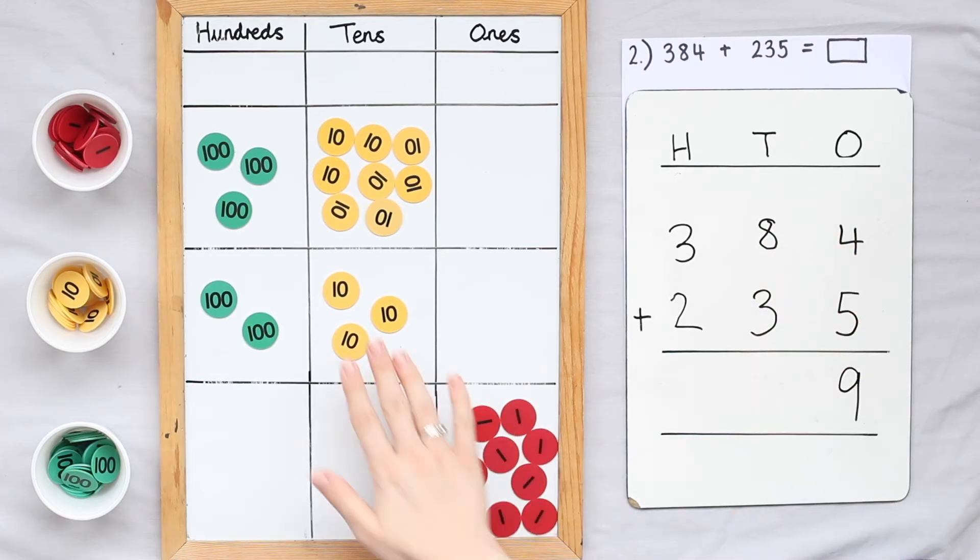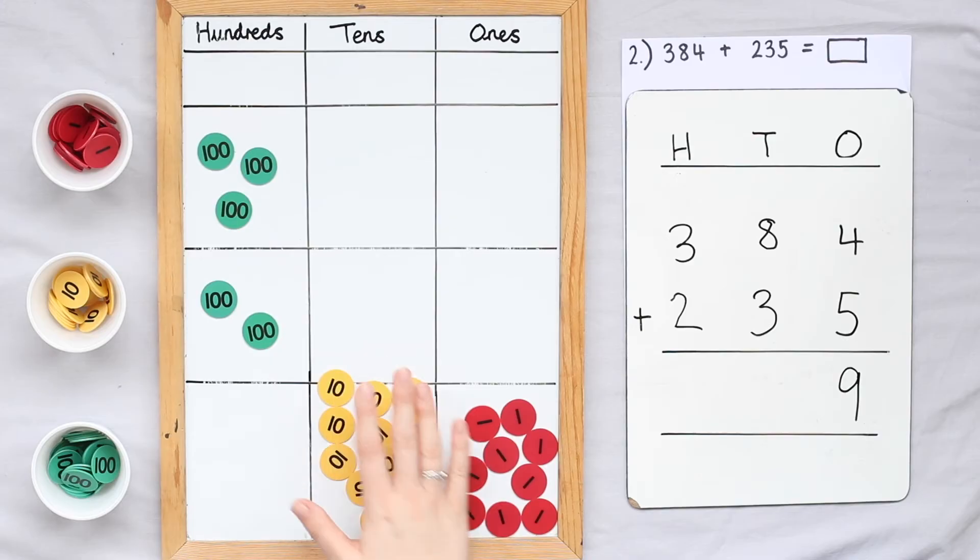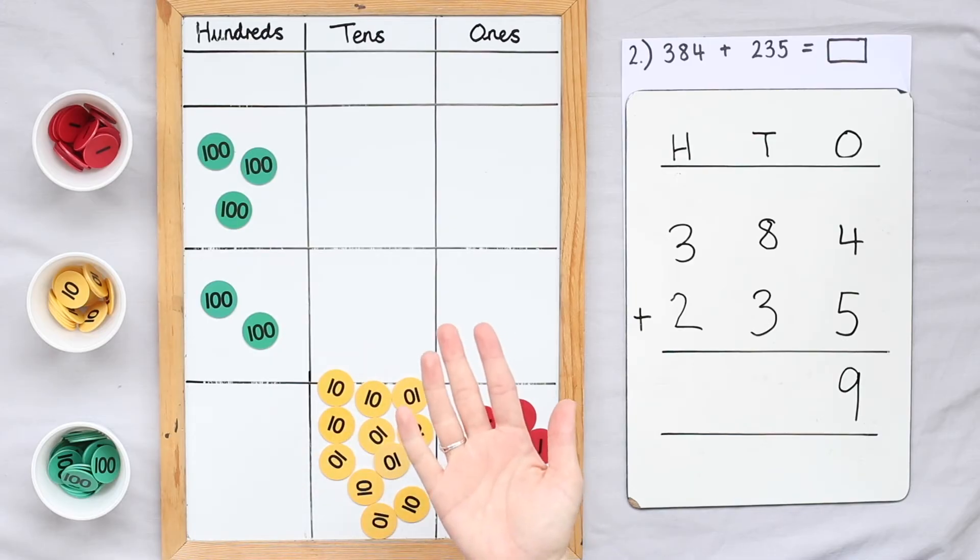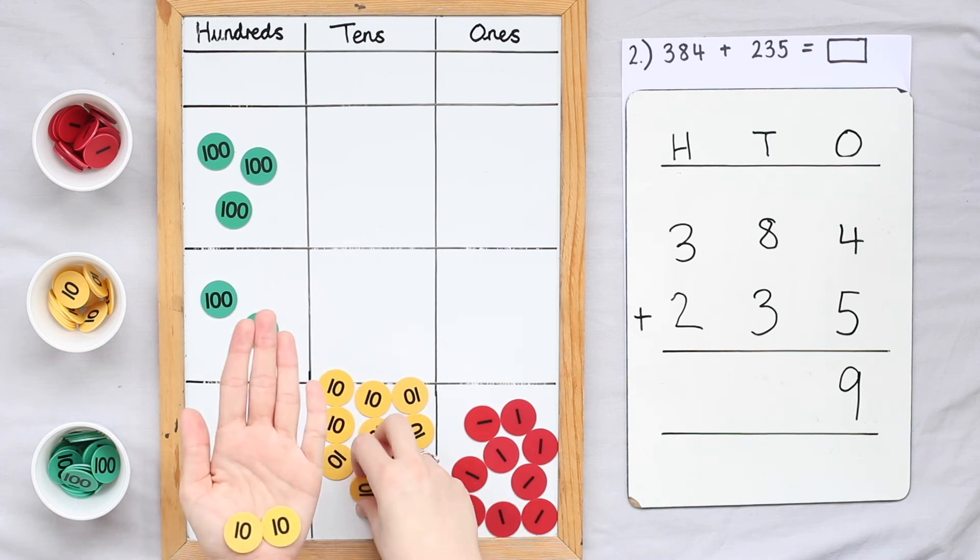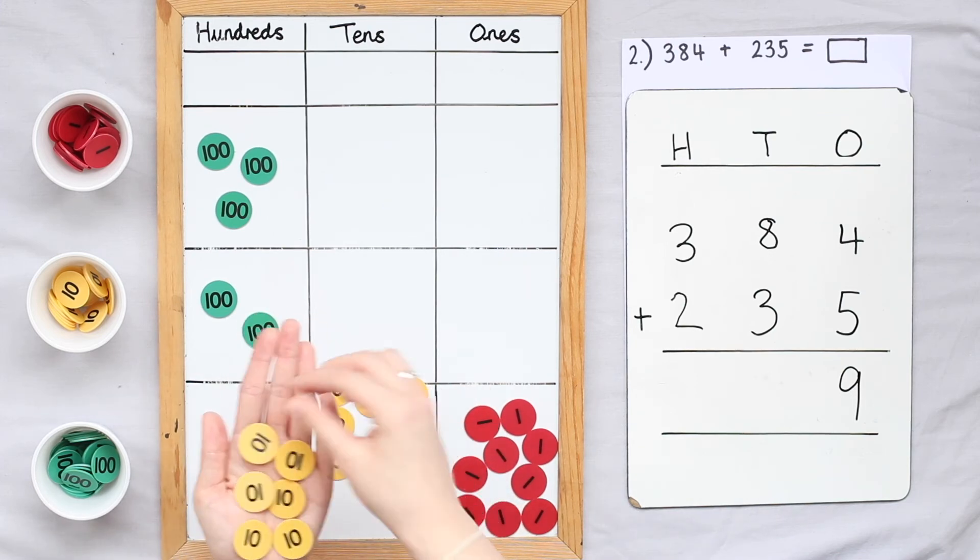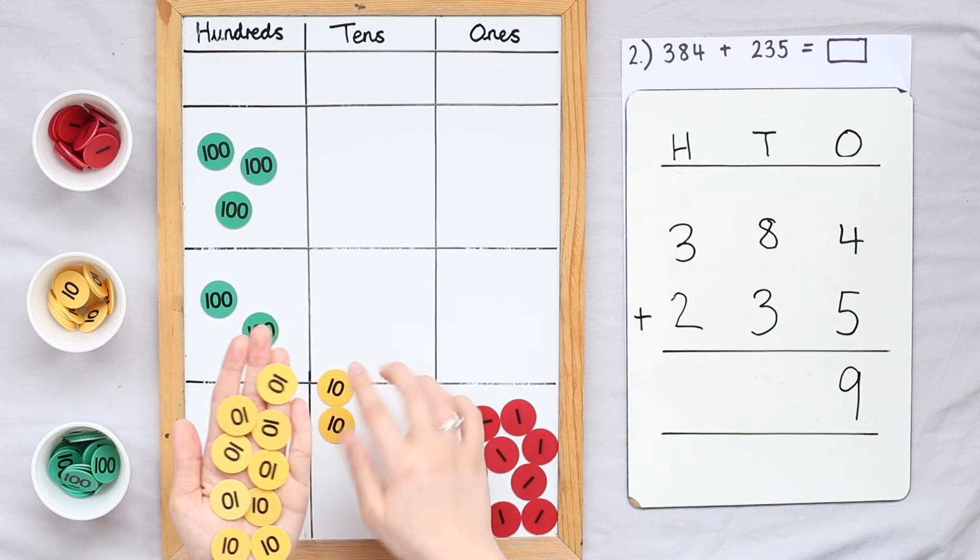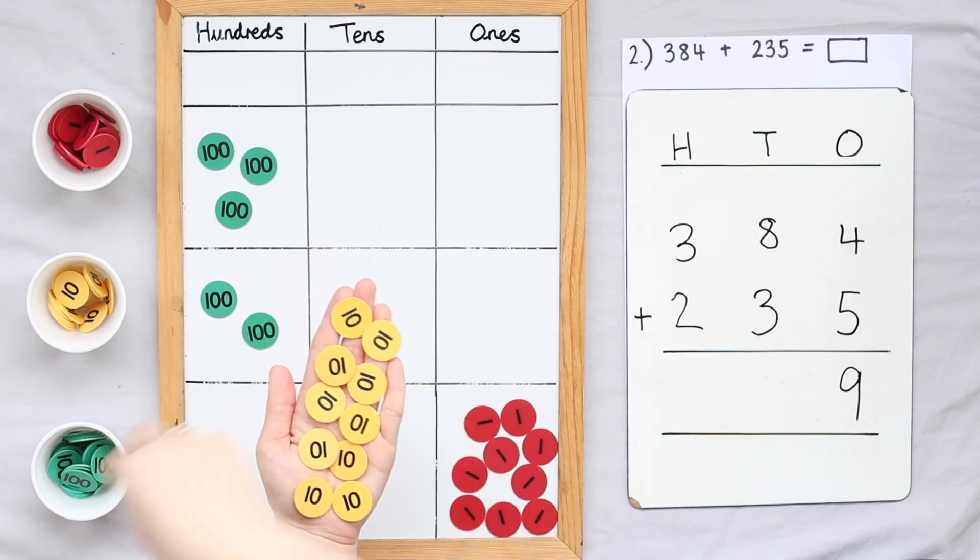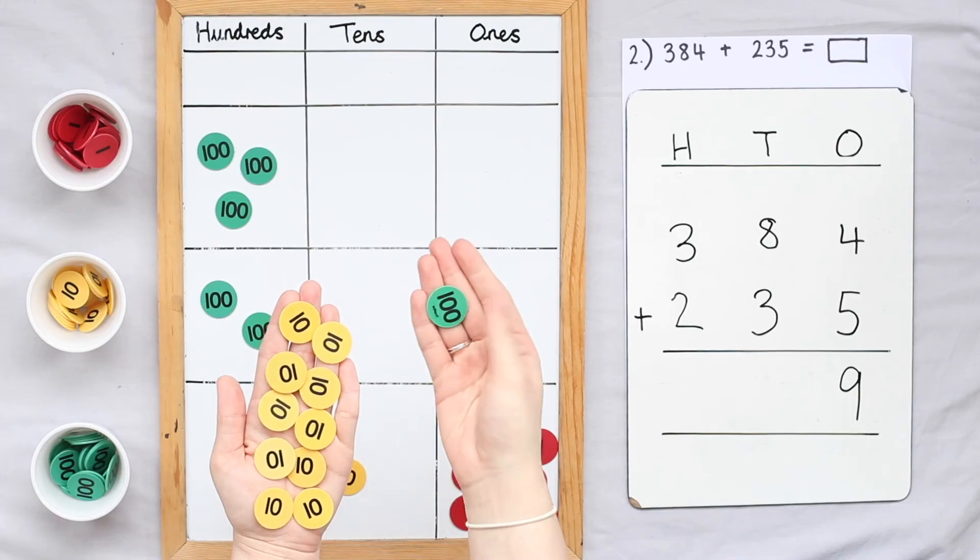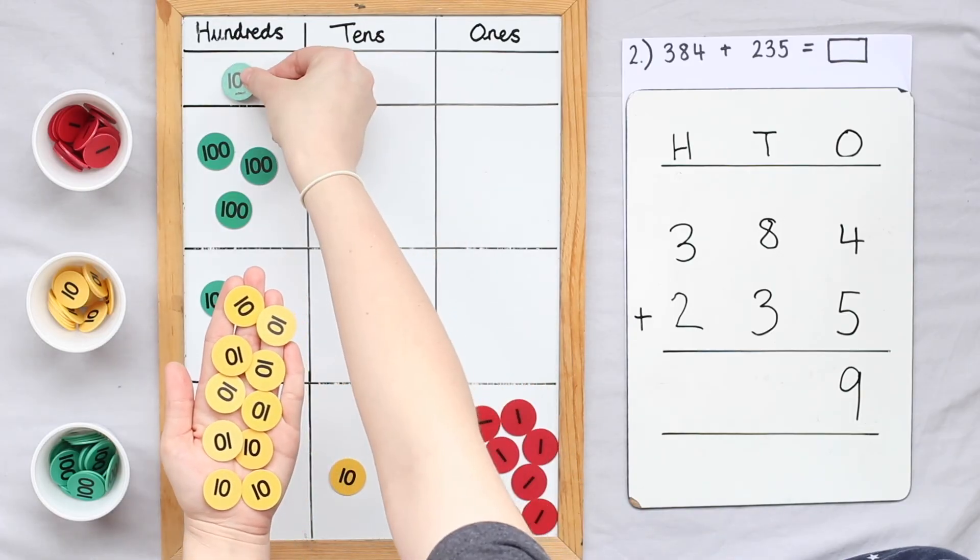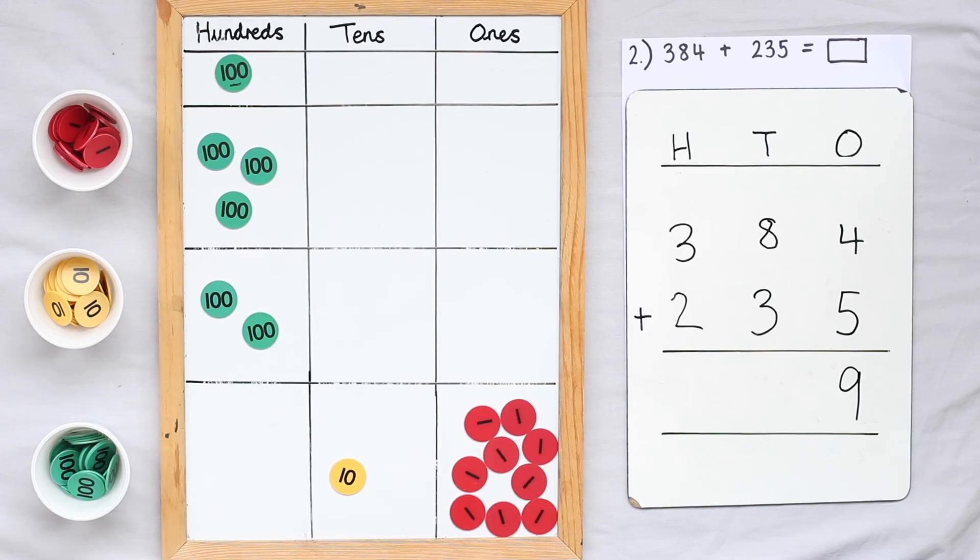Now I can move to my tens column. That's eight tens add three tens. I know eight tens add three tens equals eleven tens. I can't write eleven tens in my tens column because that's too many digits. Well let's think about this. Eleven tens is the same as a hundred and ten. Because I know ten tens is the same as one hundred, I can regroup ten tens into one hundred and place this in the hundreds column. Recording this correctly is really important and where most mistakes are made.